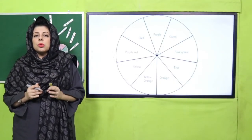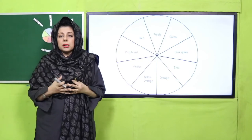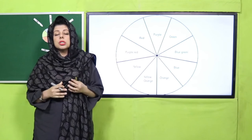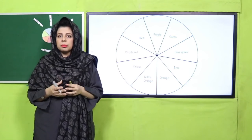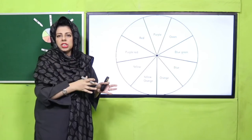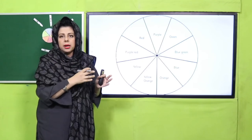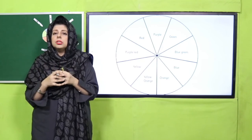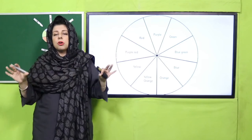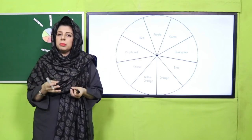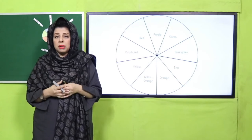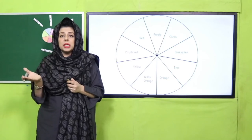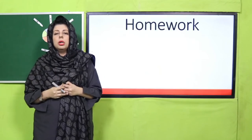Toh bachay, jab aap ne color wheel ko color kar liya, toh aap ne dekha jo aap ne combination color ka banaya - red and purple ka, ya orange and yellow ka - toh is se jo rang bana woh kitna different tha. Yaad rakhiye: tertiary color ko jab aap kisi - agar orange-red aap ne banaya, aap orange ke paas rakhen ge toh aap ko reddish lagega, lekin jab red ke paas rakhen ge toh yeh orangish lagega. This is how we make tertiary colors. Hamare aas paas maujood mahol mein bachon, jitne bhi colors hain woh isi tarah primary, secondary, aur sometimes tertiary colors ko mix kar ke bhi hum naye colors banate hain.